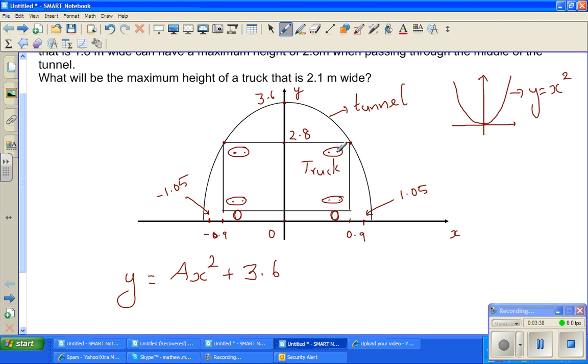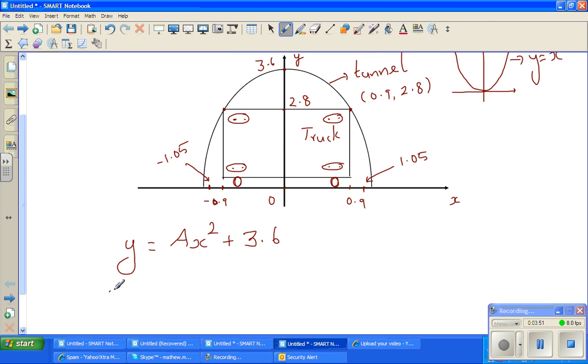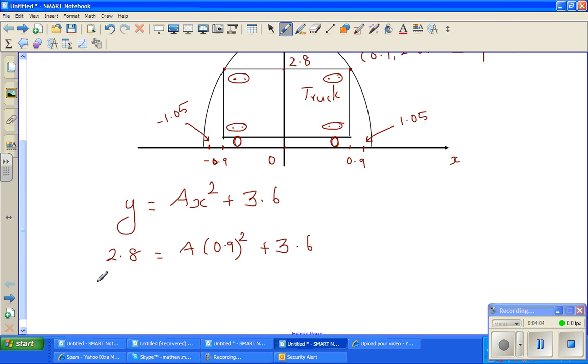Let us take this point. This point is 0.9 comma 2.8. So I can put x as 0.9 and y as 2.8. So I can say, well, 2.8 equals a times 0.9 squared plus 3.6. So taking away 3.6 from both sides, you get 2.8 minus 3.6 equals 0.9 squared is 0.81a. 0.9 times 0.9 is 0.81.